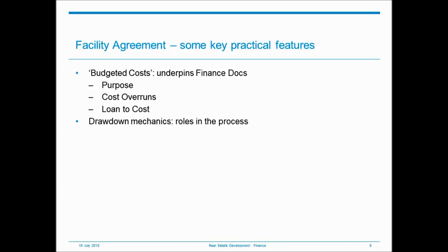Any development finance facility, including the LMA standard, will have reasonably detailed provisions on the mechanics surrounding drawdown. The SPV wants to pay development costs by drawing under the facility; the bank wants to be comfortable it's appropriate to advance the requested drawdown. The relevant LMA provisions involve the supply to the bank of the utilisation request plus various supporting documents — invoices etc. — a certificate typically from the employer's agent on behalf of the SPV, and a sign-off from the bank's project monitor confirming it's comfortable the drawdown should go ahead. It's a good idea to make sure all concerned in that process have seen and understand the relevant provisions in the facility agreement.